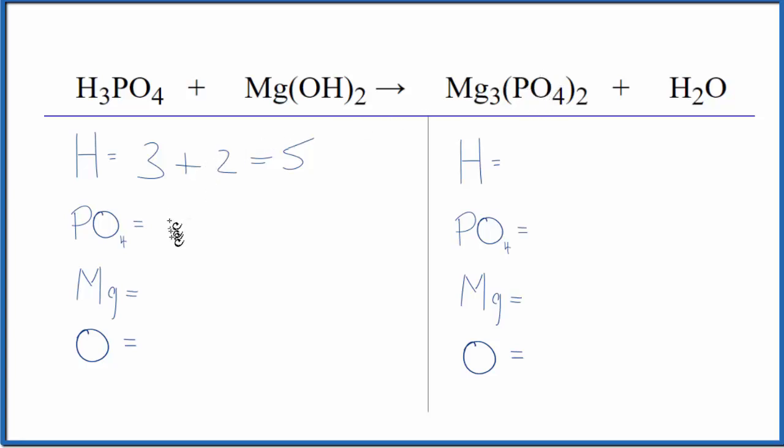That simplifies balancing equations when you have polyatomic ions on both sides. We're just going to say we have one phosphate, we have one magnesium, and then the oxygens, we have one times two. This two applies to everything in the parentheses, so one times two, two oxygen atoms.